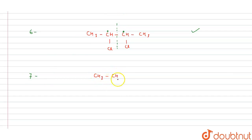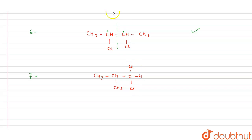The seventh isomer is a branched structure: CH3-CH(CH3)-CHCl-CH2Cl. No plane of symmetry is present, and the carbons bearing chlorine are not chiral centers. So this isomer is not a meso compound.